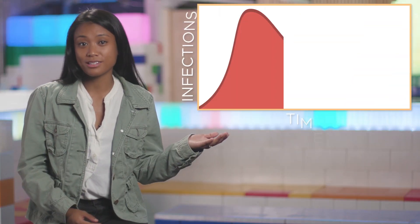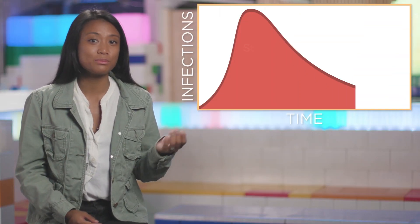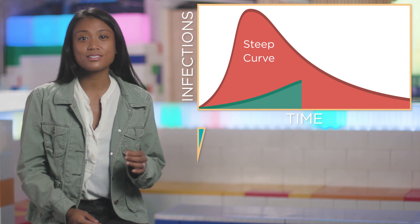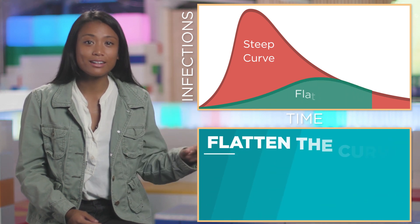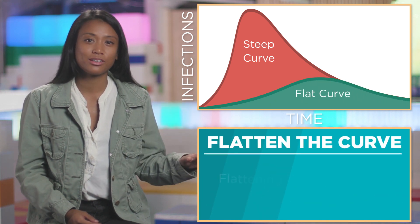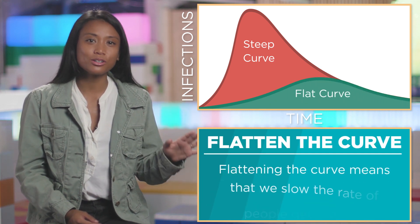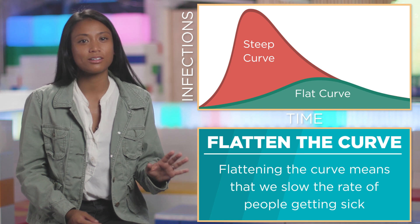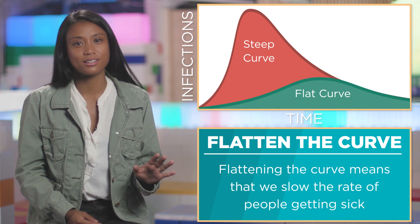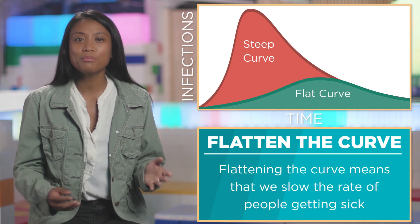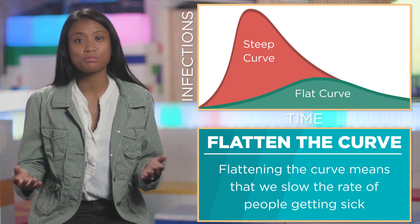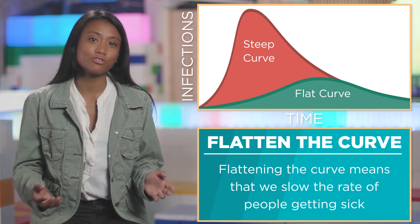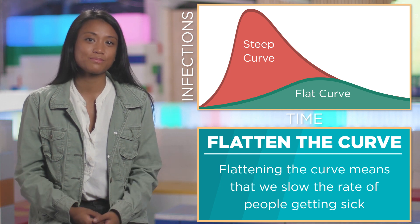This graph represents the amount of people infected. In this case, we want to flatten the curve. Flattening the curve means that we slow the rate of people getting sick. That buys health professionals more time to get people vaccinated and to save more lives.